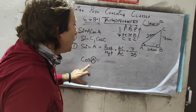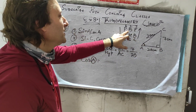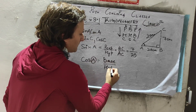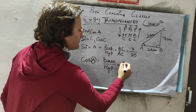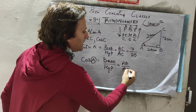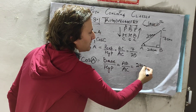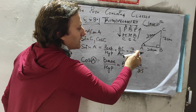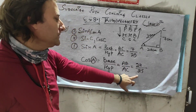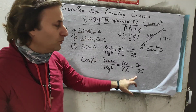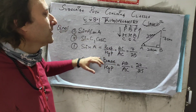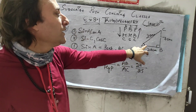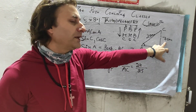Similarly, cos A equals base upon hypotenuse, which is AB upon AC. AB is 24 and AC is 25, so cos A = 24/25. We don't write centimeters here because the units cancel out top and bottom.